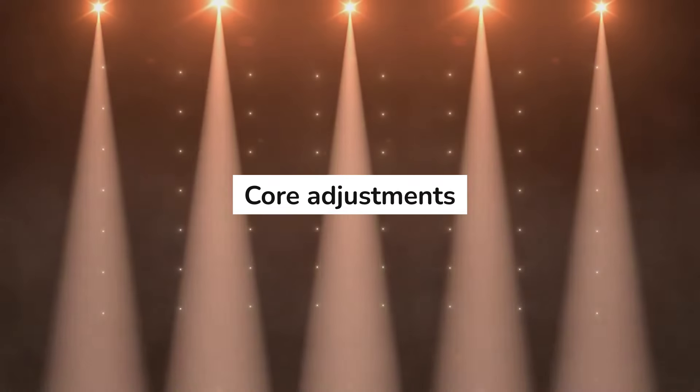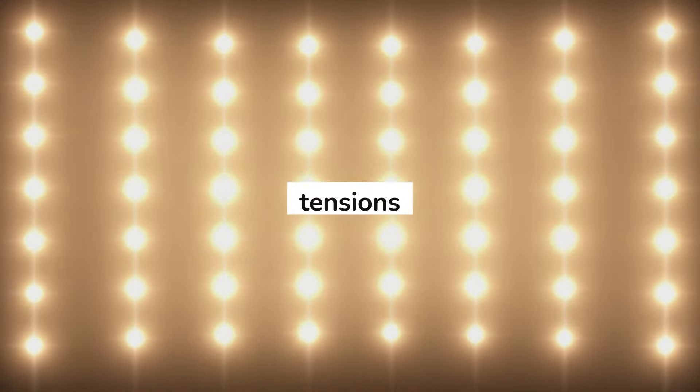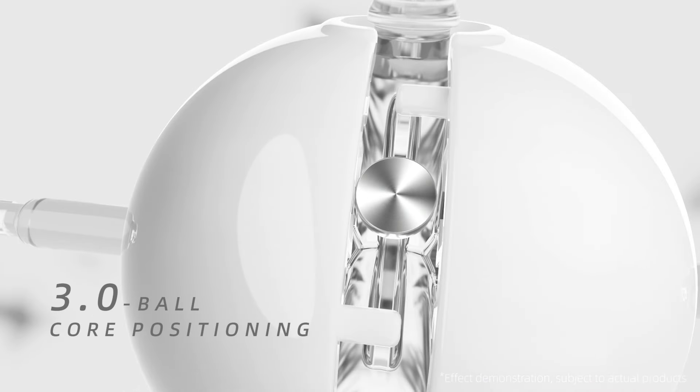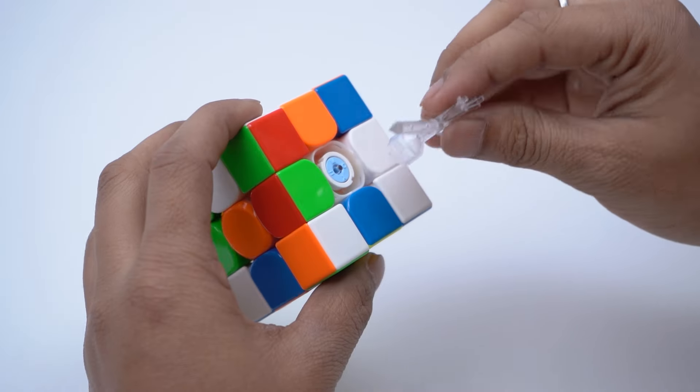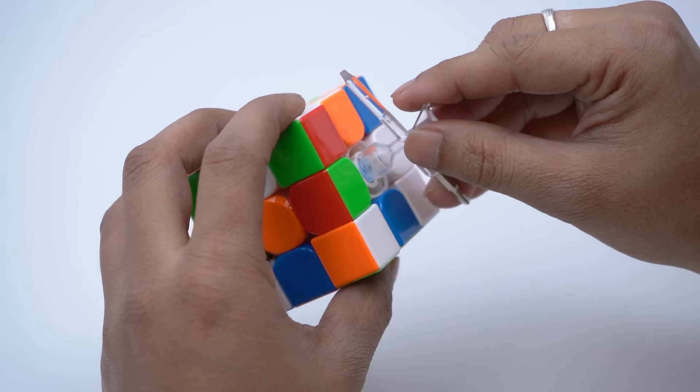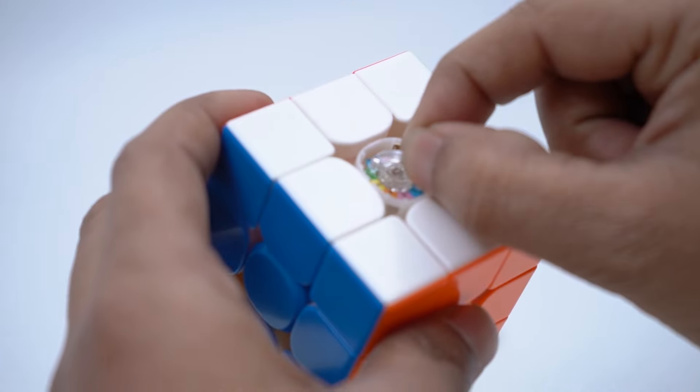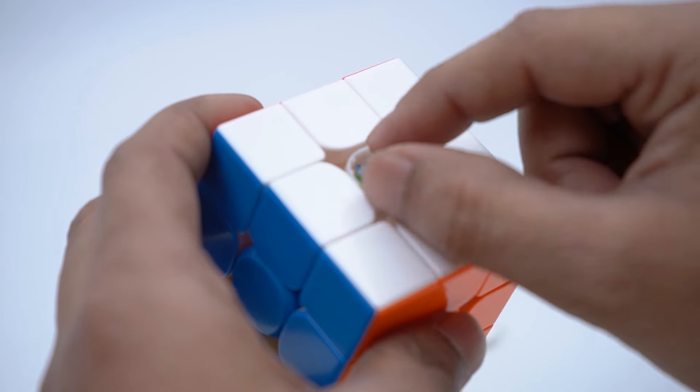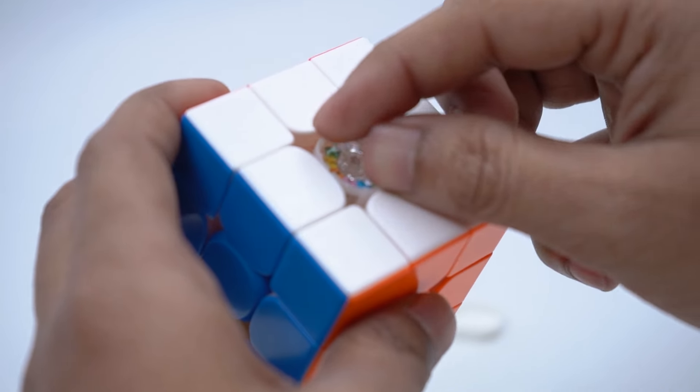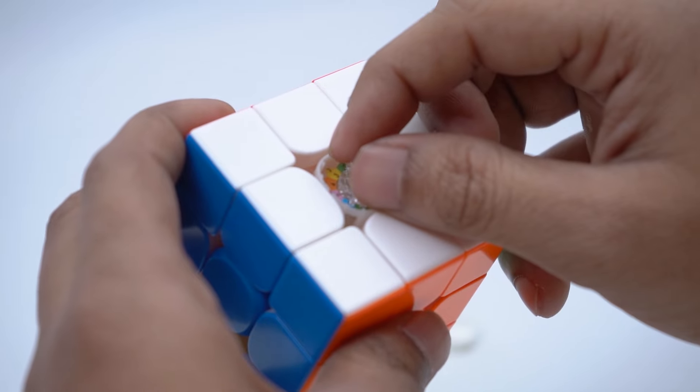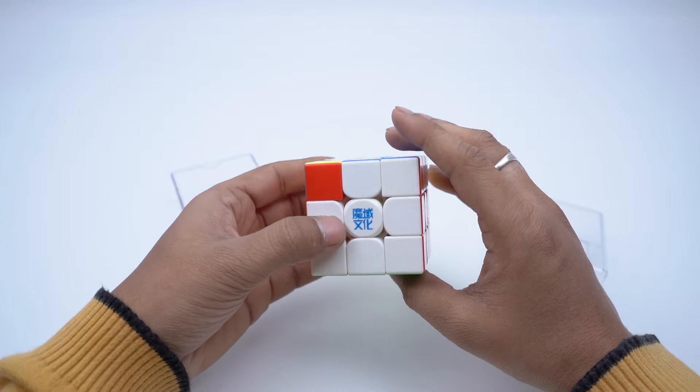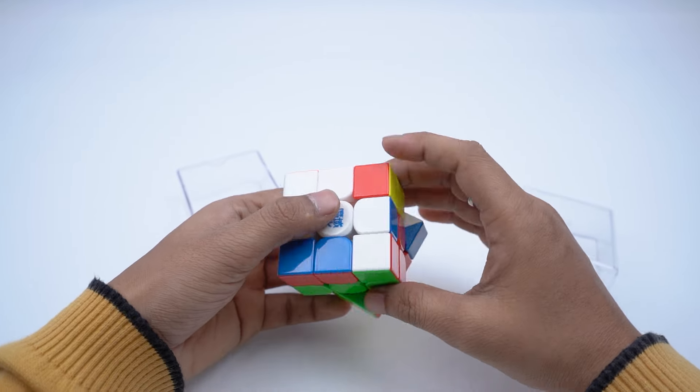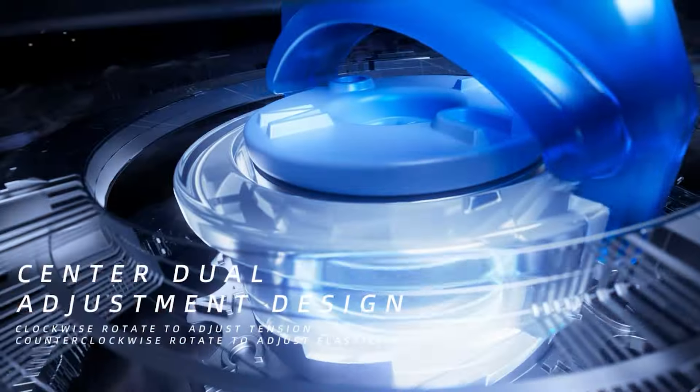Let's now discuss about core adjustments, tensions and compression settings. When it comes to core customization, both cubes offer adjustable tension and compression settings, but they differ slightly. The Tornado V4 is very user-friendly with a tool-free system, which makes it easy to adjust tension and compression intuitively. However, it offers only five settings for each, leading to a total of 25 possible combinations.